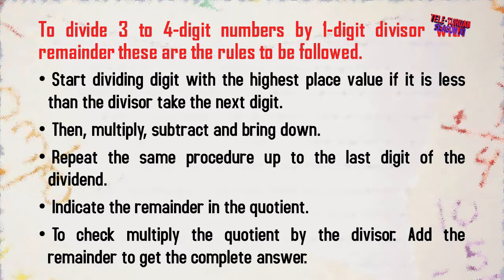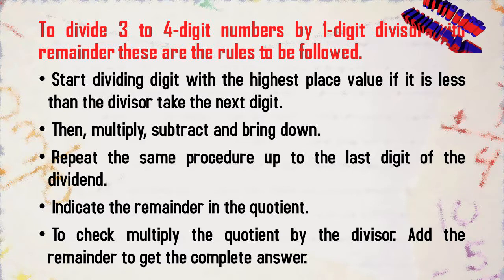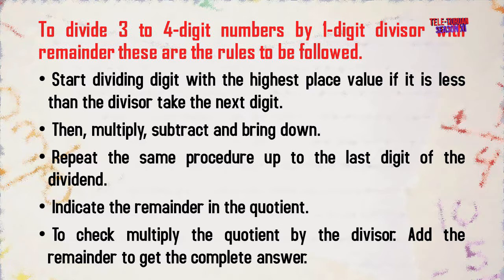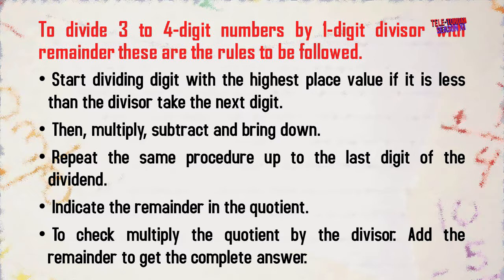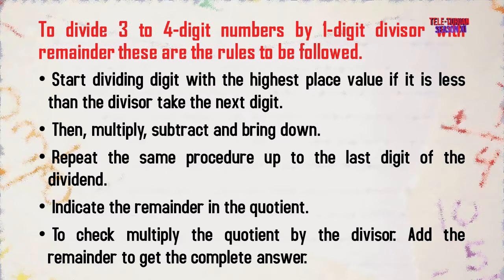To divide 2 to 3-digit numbers by a 1-digit divisor with remainder, these are the rules to follow: Start dividing digits with the highest place value. If it is less than the divisor, take the next digit. Then multiply. Subtract and bring down. Repeat this same procedure up to the last digit of the dividend. Indicate the remainder in the quotient. To check, multiply the quotient by the divisor and add the remainder to get the complete answer.